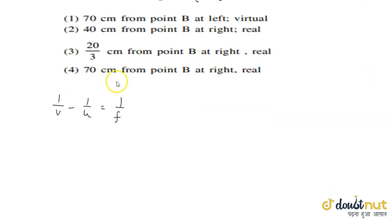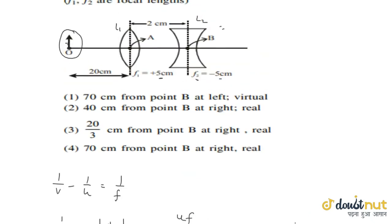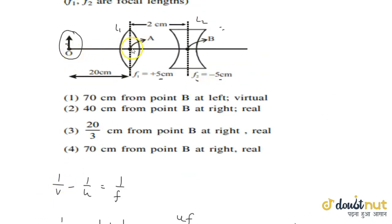We need to use the lens formula: 1 upon v is equal to 1 upon f plus 1 upon u, or we can directly write as u f upon u plus f. We need to take u with a sign. When rays go in their direction, all distances are positive, and in the opposite direction, negative. The object is placed at a distance from pole of lens 1, which is minus 20 cm because rays travel in this direction but we measure in the opposite direction.